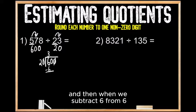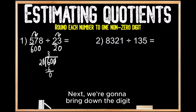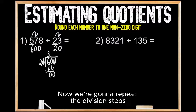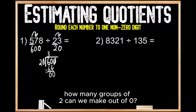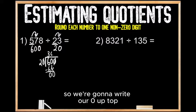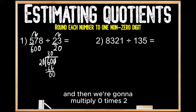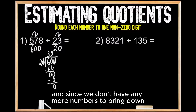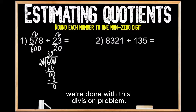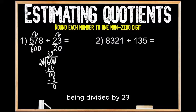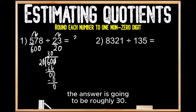Then when we multiply 3 times 2, we get 6, and when we subtract 6 from 6, we're left with 0. Next, we're going to bring down the digit that's immediately to the right, which leaves us with 0. We're thinking: how many groups of 2 can we make out of 0? We can't make any, so we write 0 up top, multiply 0 times 2 to get 0, and subtract 0 from 0, leaving 0. Since we don't have any more numbers to bring down, we're done. So when we estimate the quotient of 578 divided by 23, the answer is going to be roughly 30.